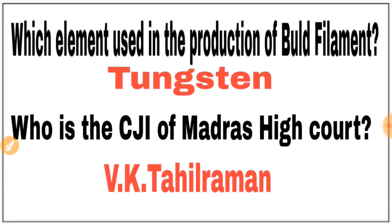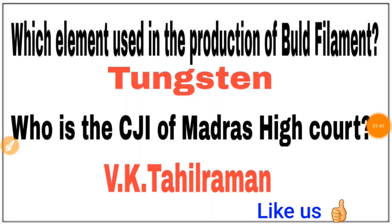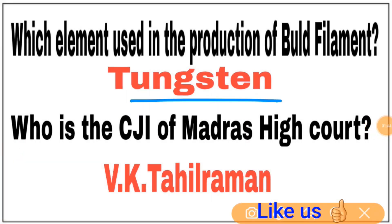Which element is used in the production of a bulb filament? The bulb filament is made of Tungsten. Tungsten is called W in the periodic table.